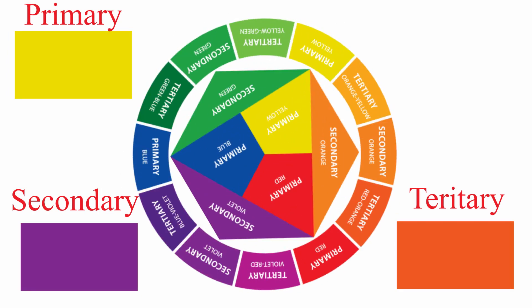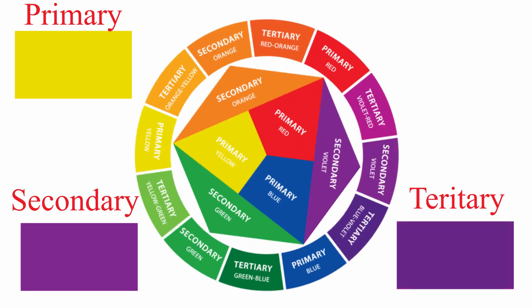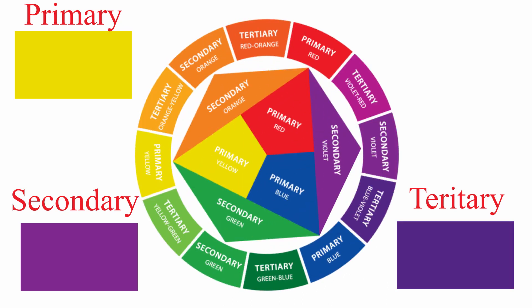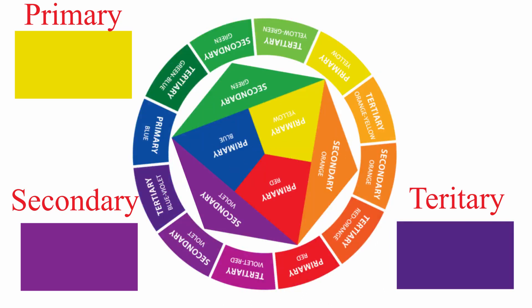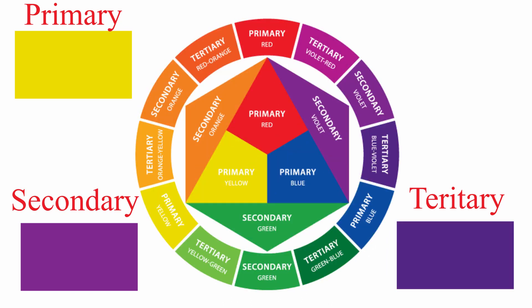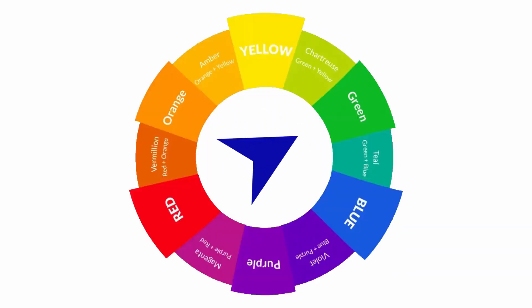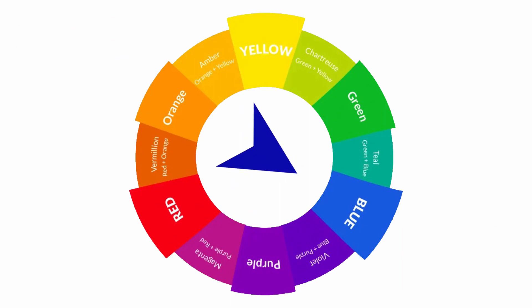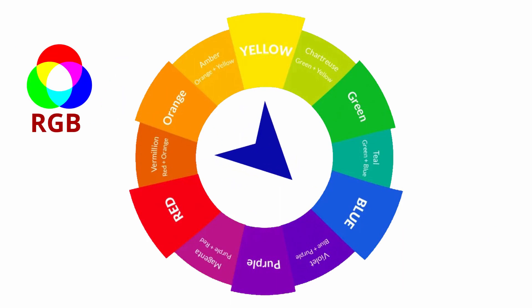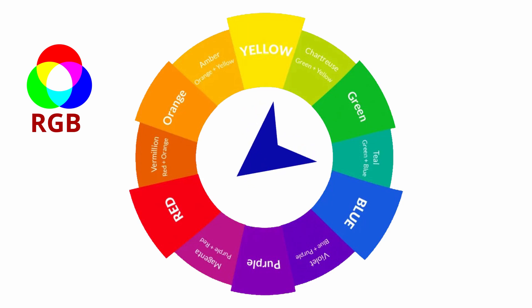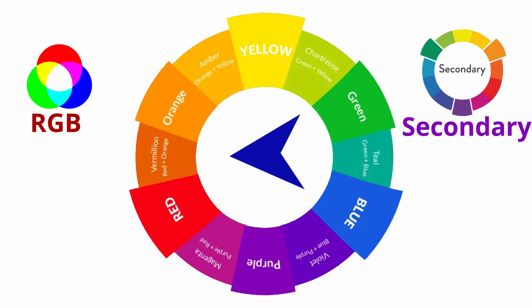A true primary color is a color that is not made up of any other colors. Most of us probably learned the primary colors are red, green and blue in school. RGB is also known as the digital primaries, which are used for displaying images on electronic devices. When we work for print output, we use cyan, magenta and yellow as the ink primaries.